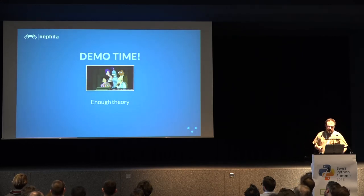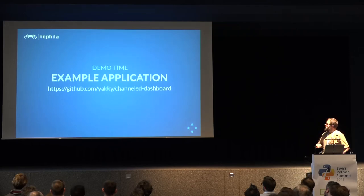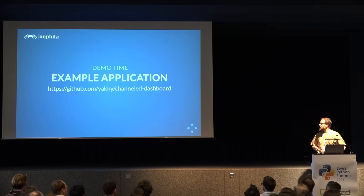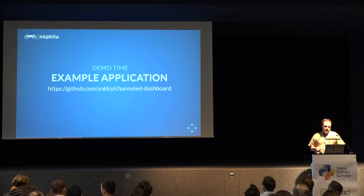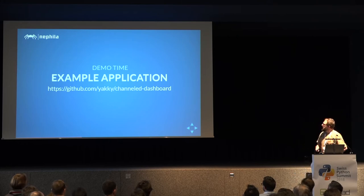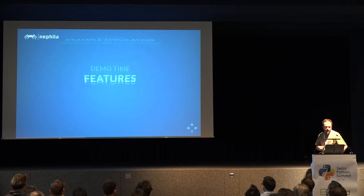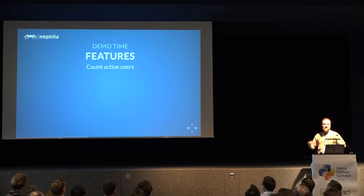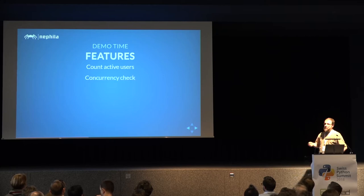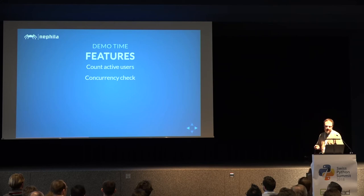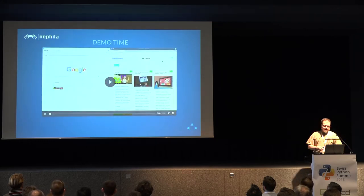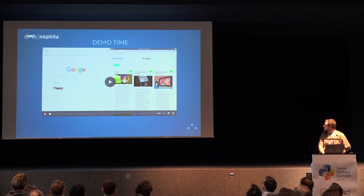Enough theory — let's see something in action. I created this application, which is a simplified version of something we built for our clients. I call it 'poor folks Google Docs.' You can count how many active users you have on the platform, know which document has been opened by which user and in which state for concurrency checks, and get browser notifications when something happens.